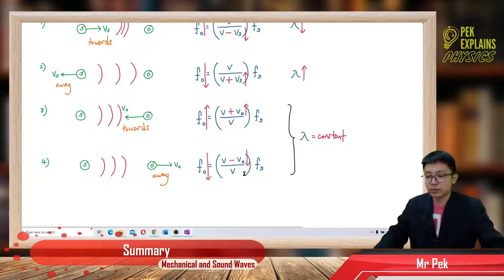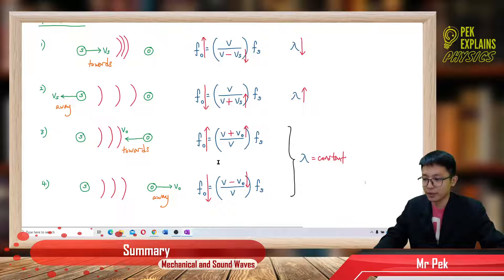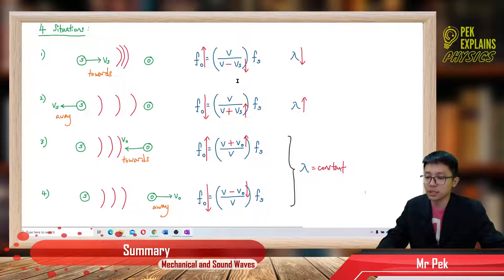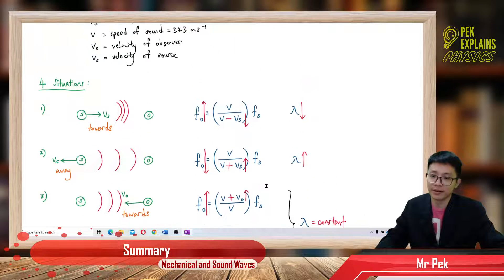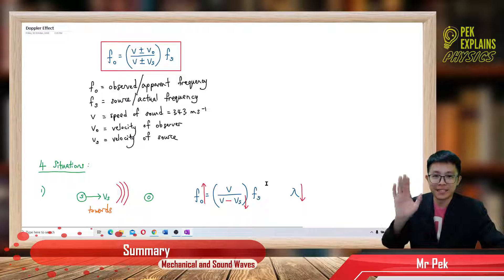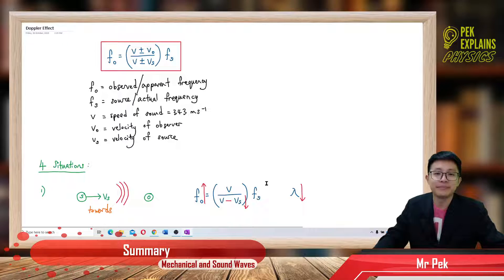The rule is simple: if moving towards, frequency always increases; if moving away, frequency always decreases. Whether you put positive or negative depends on whether the velocity is at the top or bottom — then use logic to determine the sign. I hope you enjoyed this lesson; stay tuned for upcoming problem-solving videos. Please like and subscribe — bye!